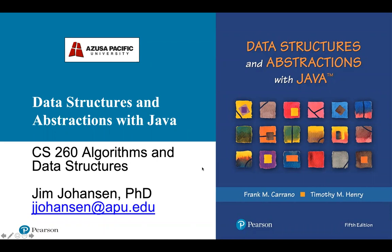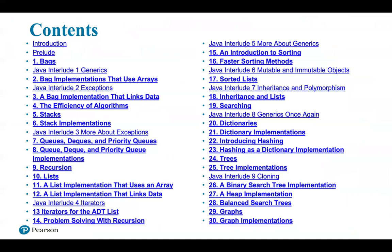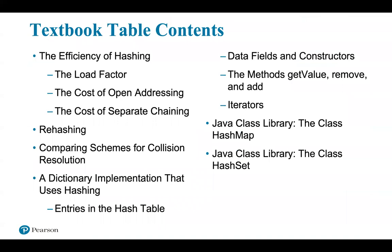Welcome back to our class, Algorithms and Data Structures. In our last lecture, we talked about hashing — that was a general introduction. In this next lecture, we'll be focusing on hashing as a dictionary implementation. Here is the table of contents: we'll be talking about the efficiency of hashing, the concept of rehashing, comparing schemes for collision resolutions, a dictionary implementation that uses hashing, and the Java class libraries — HashMap and HashSet.